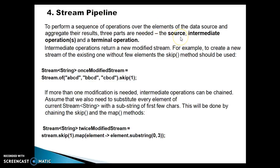You require a source through which we can create the stream — that may be an array or a stream or some other thing as well. Then you perform the intermediate operations; you may have one or many intermediate operations. And finally you have a terminal operation — and a stream can have only one terminal operation.